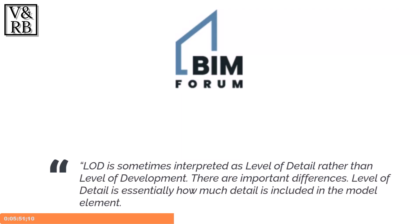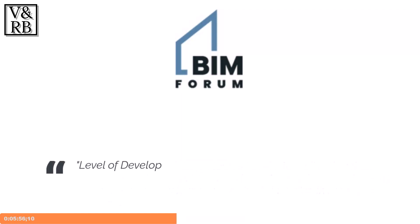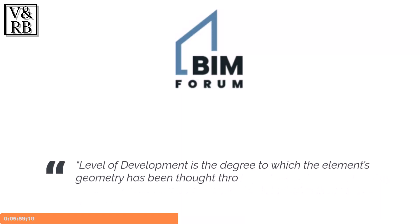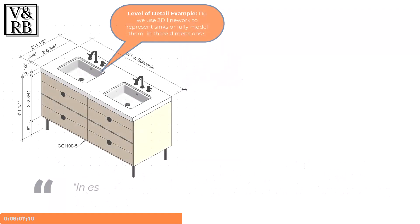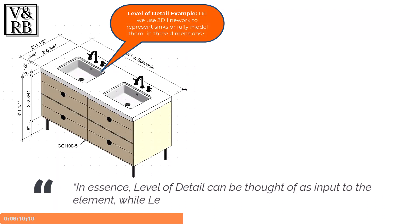Level of detail is essentially how much detail is included in the model element. Level of development is the degree to which the element's geometry has been thought through — the degree to which the project team members may rely on the information when using the model. In essence, level of detail can be thought of as input to the element, while level of development is reliable output.